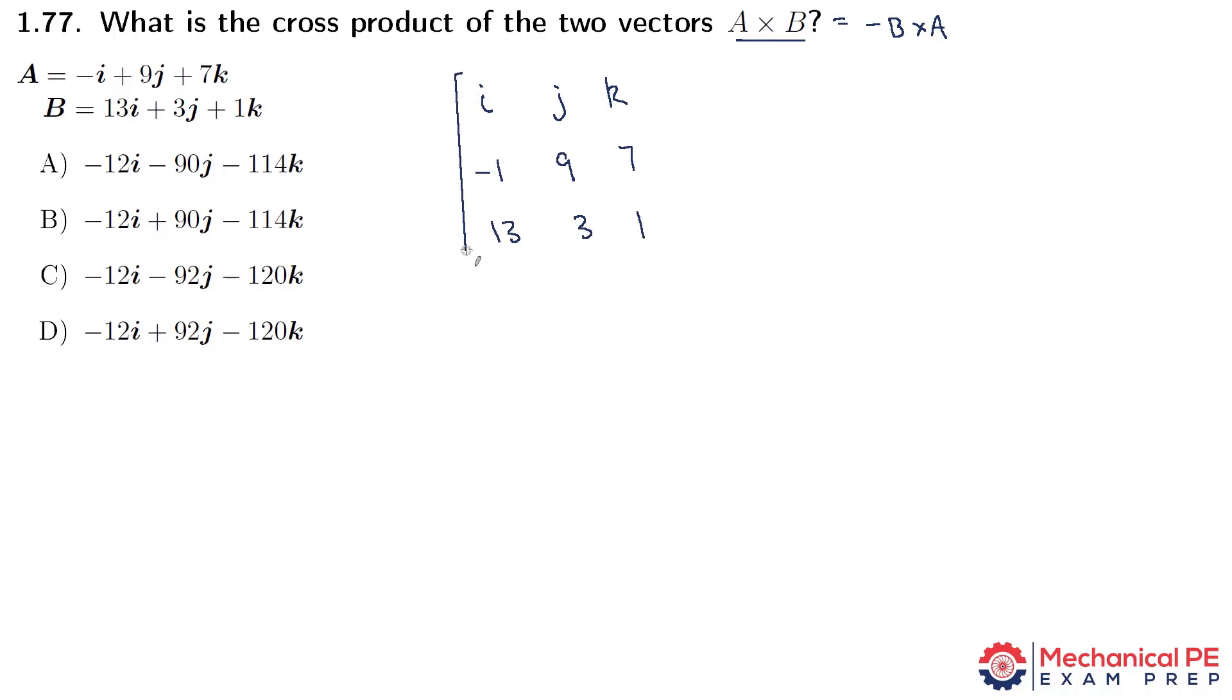Then once we get that matrix, our goal is to find the discriminant. And as a reminder, in case you haven't done that in a while, you can look at the sections cross product and vectors in the reference handbook. But I'll just show you how to do it here.